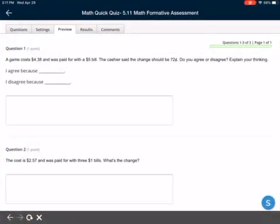Number one says a game costs four dollars and 38 cents and was paid for with a five dollar bill. The cashier said the change should be 72 cents. Do you agree or disagree? Explain your thinking.